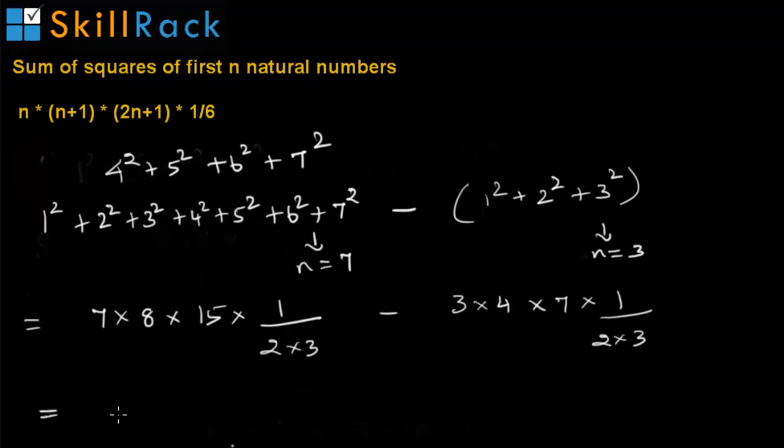So doing the calculation we can find that the sum of the squares 4 squared plus 5 squared plus 6 squared plus 7 squared is nothing but 126.